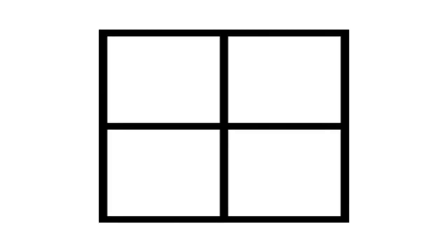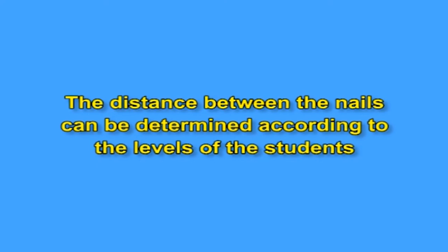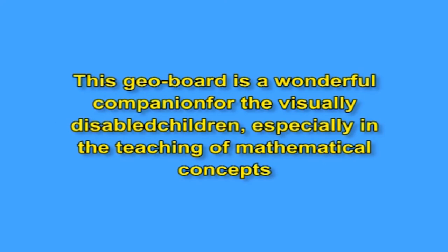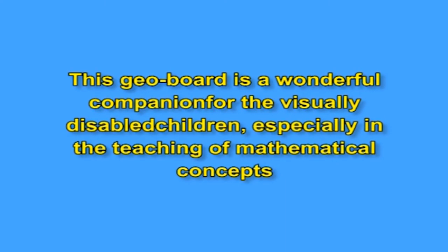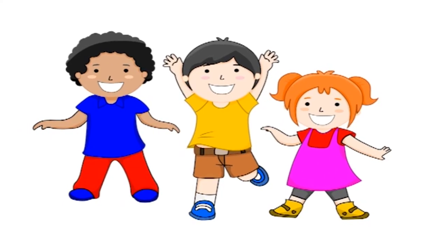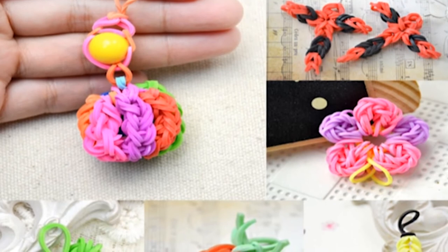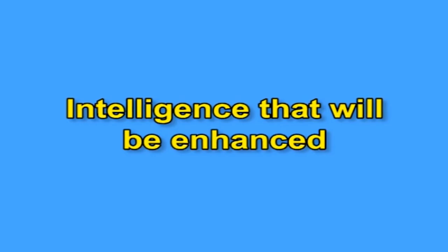It is a multipurpose board that can be used for showing geometrical figures and graphs. It is a pegboard, square or rectangle in shape, with nails at equal distance both lengthwise and breadthwise. The distance between the nails can be determined according to the levels of the students. This geo board is a wonderful companion for visually disabled children, especially in the teaching of mathematical concepts. Geo board will introduce children to a host of new terms and concepts, and they will probably be too busy exploring and discovering to notice they are learning. This activity helps children discover shapes, angles, lines, patterns and other geometric and mathematical concepts. Children will love putting their imaginations to work creating shapes with rubber bands or strings.